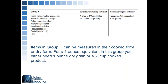Group H includes items that can be measured either in their cooked or dry form. For a one ounce equivalent in this group you would need either one ounce dry grain or a half cup cooked product. This includes cereal grains like barley and quinoa, cooked breakfast cereals like oatmeal and cream of wheat, as well as pastas, ravioli, and rice.